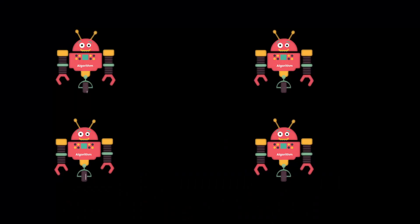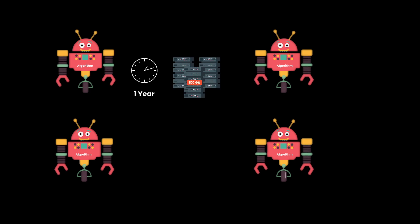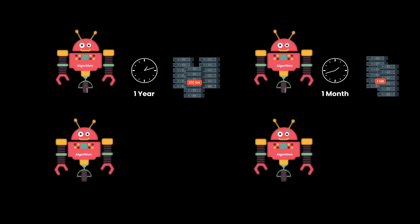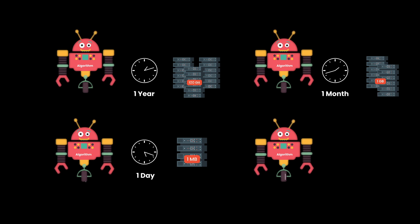For example, here we have one algorithm that takes one year and uses one GB of memory, another that takes one month and uses one GB of memory, another that takes one day and uses one MB of memory, and another that takes one second and uses 100 KB of memory. Although all four algorithms produce the desired output, the last one gives an efficient solution in terms of time and memory usage, so the fourth one is said to be an efficient algorithm.